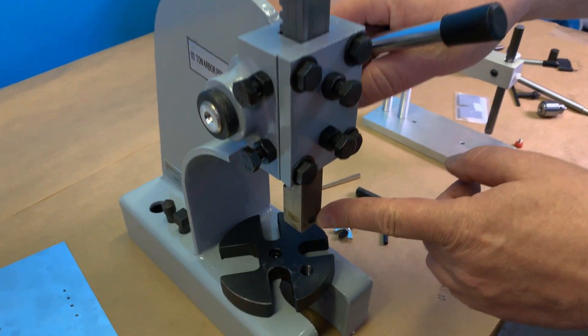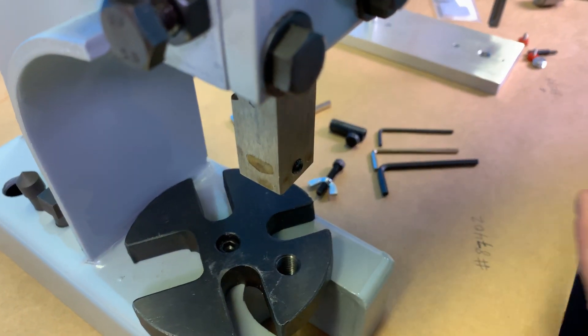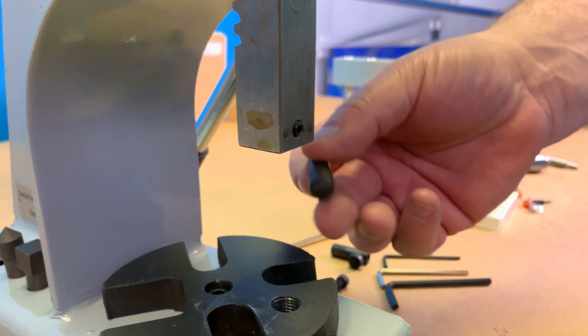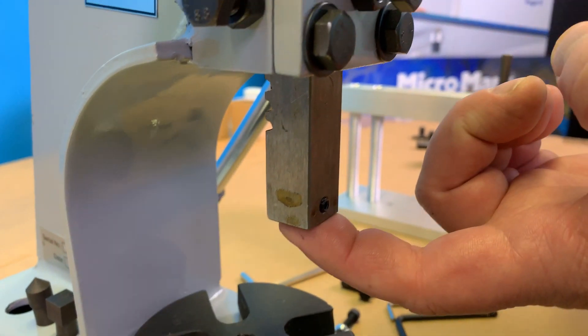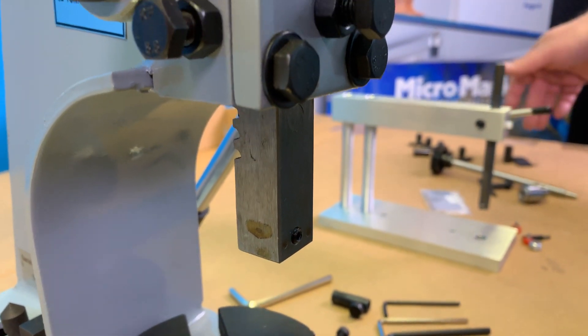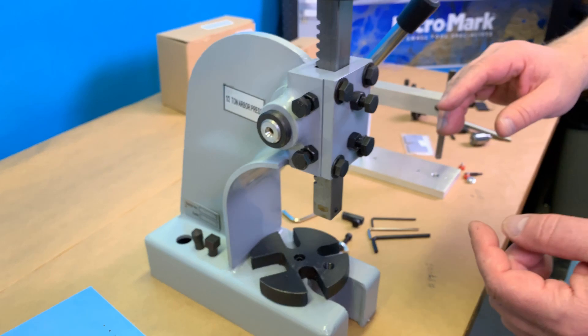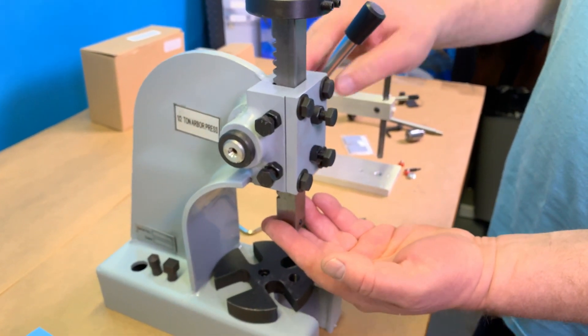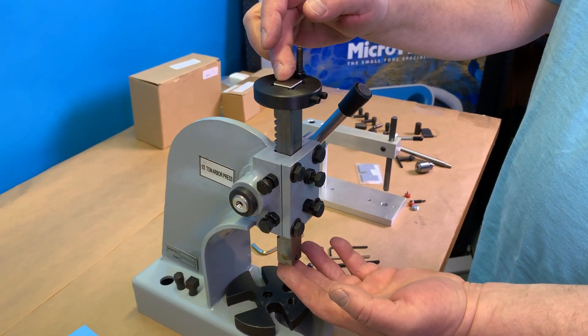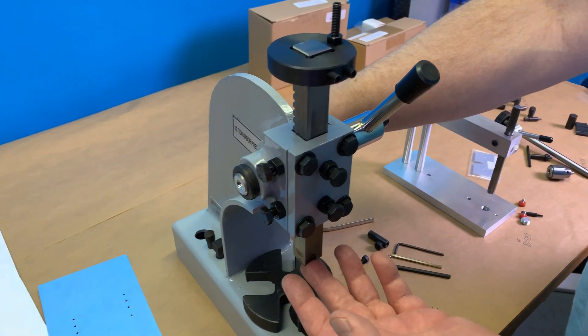There is a set screw in the ram. There is a counter bore in the center of the ram that's three eighths of an inch and that is there to accept the different tooling we provide with it. This ram is not hardened. If you ever wanted to modify the ram for a particular shape or point, you could because it's not hardened. The tips are what's hardened.